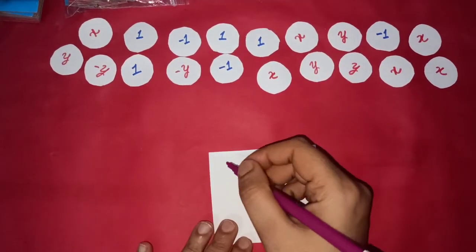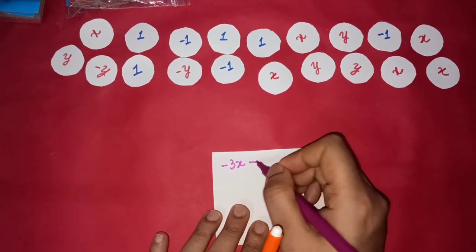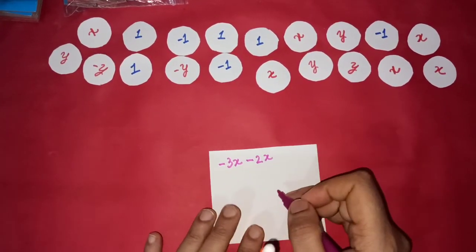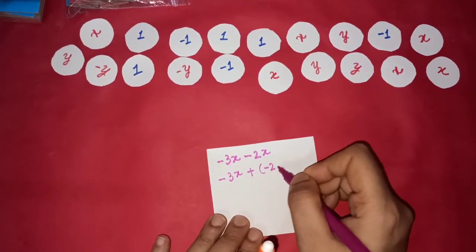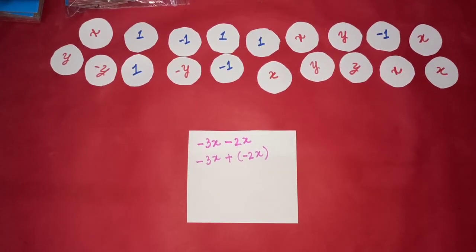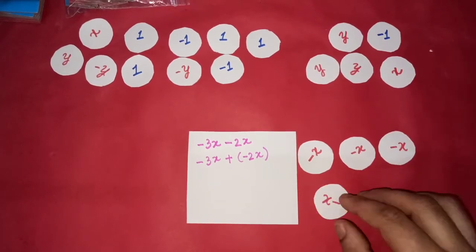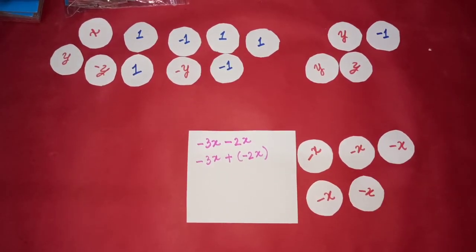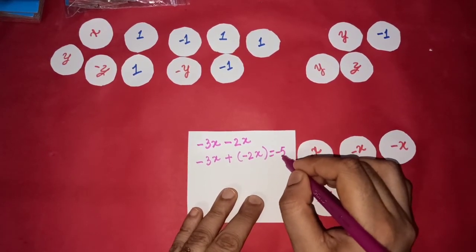Let's take another problem. We have negative 3x minus 2x. It can be written as negative 3x plus negative 2x. So let's see how we are going to use our tiles to solve it. Yes, we can clearly see that the answer is negative 5x.